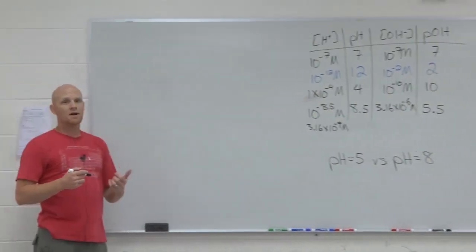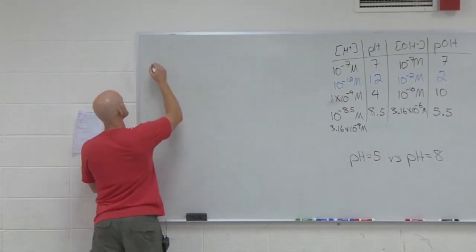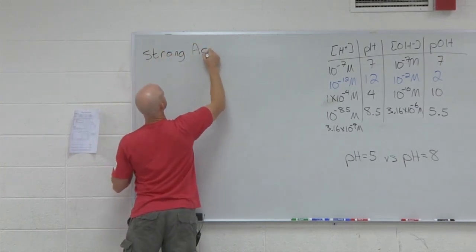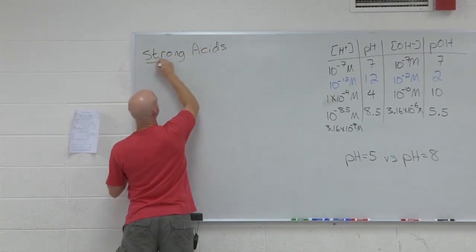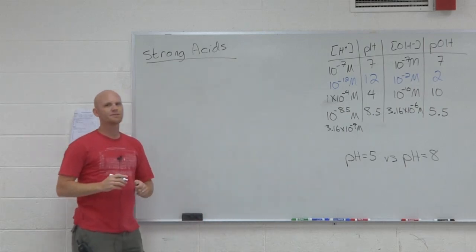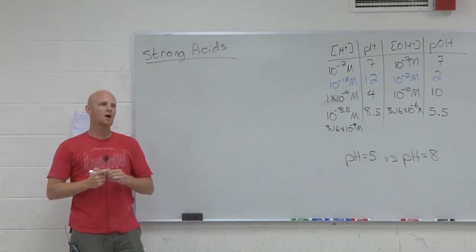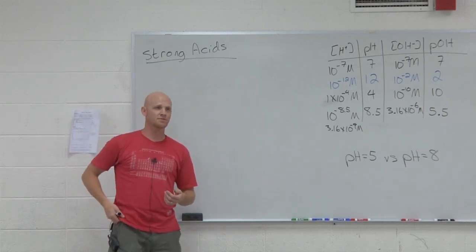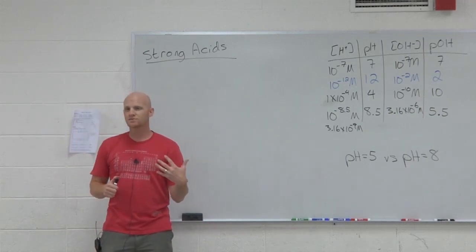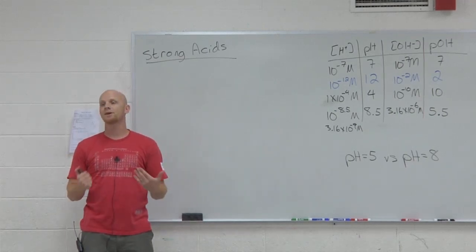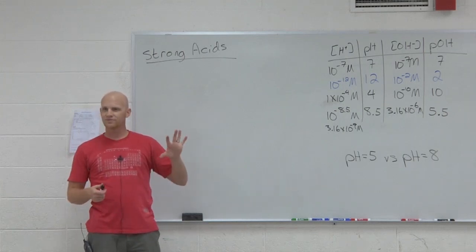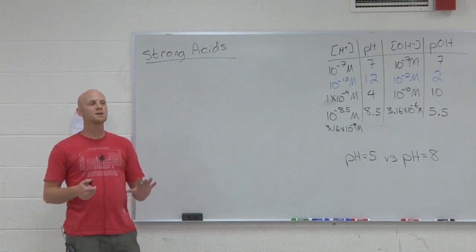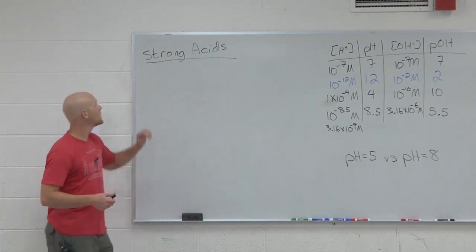All right, so let's talk about strong acids and strong bases. There are really five fundamental types of problems when you're doing calculations for acid-base stuff. Each of those five can then be used to solve titration problems, but there's only five fundamental types. When you realize what those five types are, it makes it much easier to approach a problem.